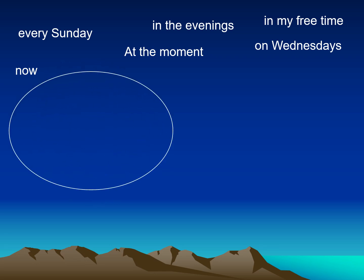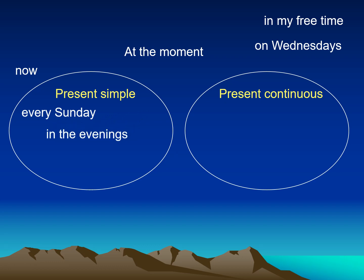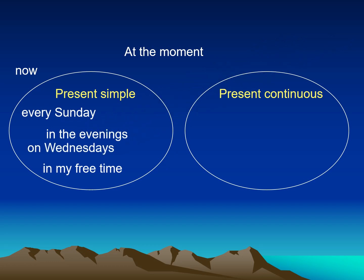Let's have an exercise here. I have some keywords — which keywords do I use with the present simple and which do I use with the present continuous? Every Sunday — present simple. In the evenings, meaning every evening — present simple. In my free time — present simple; it's a habit. On Wednesdays — present simple. I use the present continuous when I speak about things I'm doing right now or at the moment.